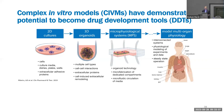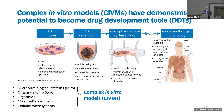It's clear that complex in vitro models have the potential to become valuable drug development tools. Currently, the in vitro models used most commonly are 2D cultures. These have important value but also limitations because they often represent only a single cell type. By developing more complex models like 3D organoids, microphysiologic systems, and models of multi-organ physiology, we can add additional elements important to physiology to make these in vitro tools more reflective of human physiology and human pathology. The CIVMs included are microphysiologic systems, organs-on-chips, organoids, micropatterned cells, and cellular microsystems.